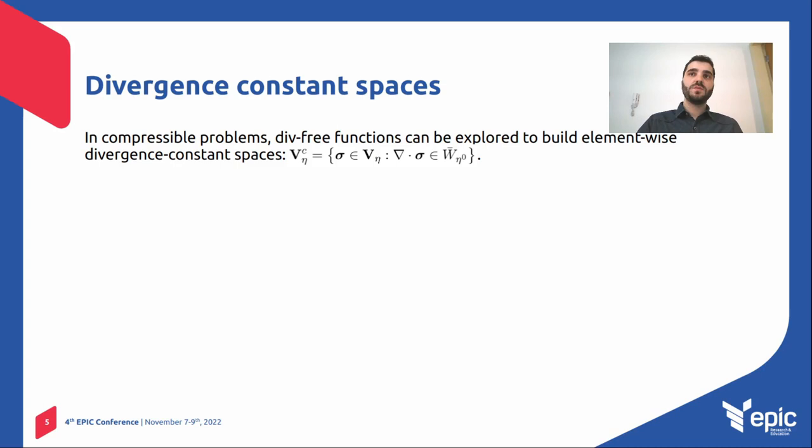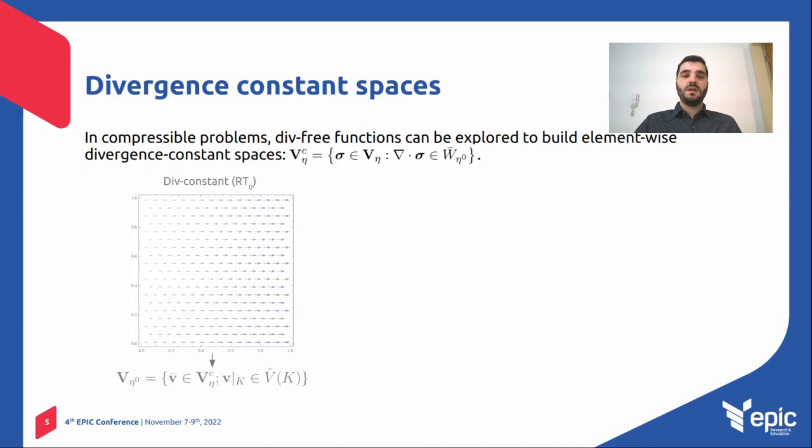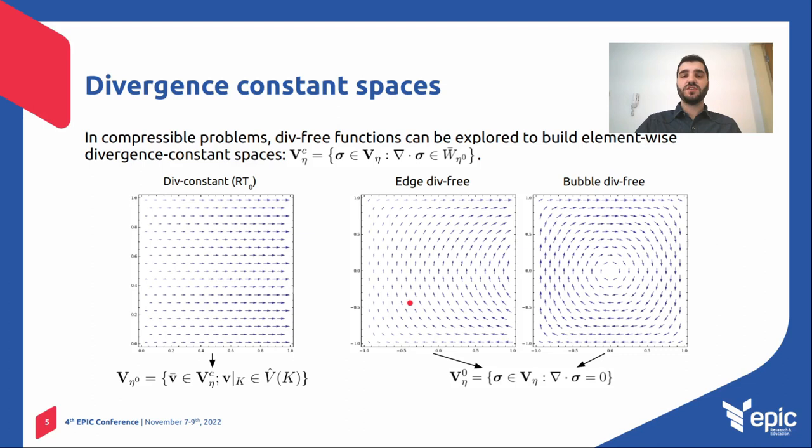It is a finite element space built with an element-wise divergence constant term. In this case, we take the lowest-order Raviart-Thomas finite element space, which has constant normal flux per face, as illustrated here in this figure.